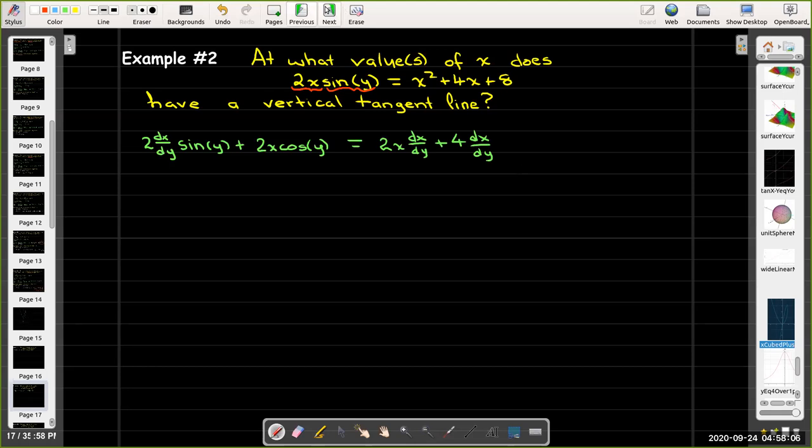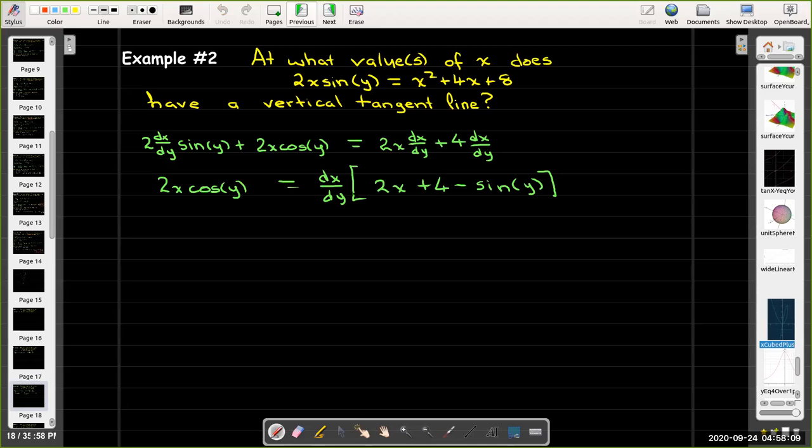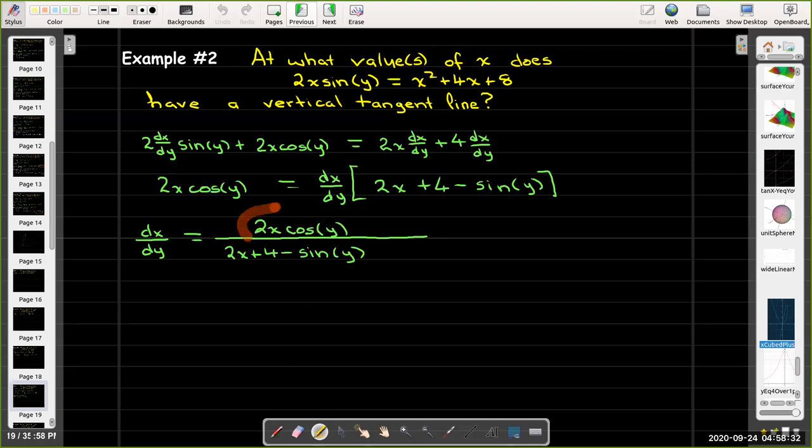Let's do some algebra. We'll get all the terms with the dx/dy on the right hand side. Factor out the dx/dy and solve for dx/dy. I'll get 2x cos(y) in the numerator and the denominator will have 2x + 4 - 2 sin(y). So we're back to the condition where we want to make sure that the top is equal to 0 and the bottom is not equal to 0. So that means 2x times cos(y) will be 0. And the only way that can be true is either x equals 0 or cos(y) equals 0.